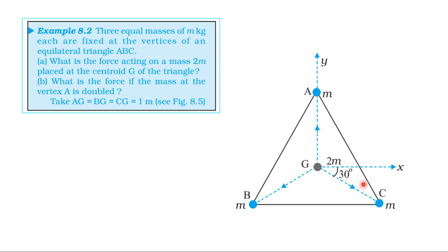This is figure 8.5 from the book. If you look at the equilateral triangle, this is vertex A, B, C, and this is the centroid G of the triangle. The three equal masses, each of mass M kilogram, are placed at the vertices. The first question: at the centroid, a 2M mass is placed.